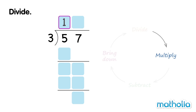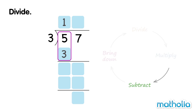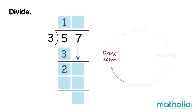Next, we multiply. 1 ten times 3 equals 3 tens. Now we subtract. 5 tens minus 3 tens equals 2 tens. Bring down the ones.